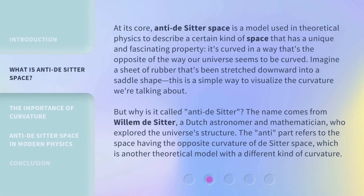At its core, Anti-de Sitter Space is a model used in theoretical physics to describe a certain kind of space that has a unique and fascinating property. It's curved in a way that's the opposite of the way our universe seems to be curved. Imagine a sheet of rubber that's been stretched downward into a saddle shape — this is a simple way to visualize the curvature we're talking about.